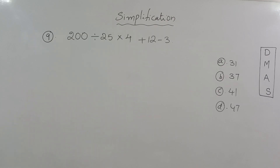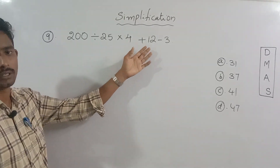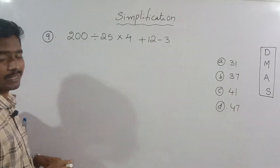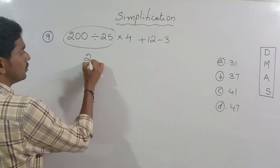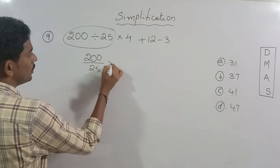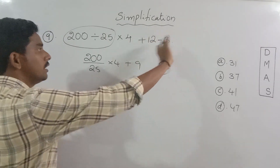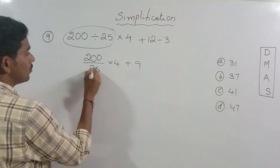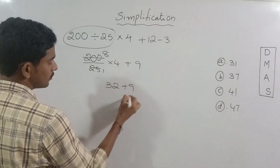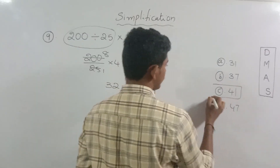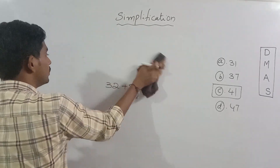Okay, look at the 9th one: 200 is divided by 25 into 4, plus 12 minus 3. So first I'll do division. 25 table 200: 25 times 8 is 200. Into 4: 8 times 4 is 32. Plus 9: 32 plus 9 is 41. Okay, 41 is the correct answer.